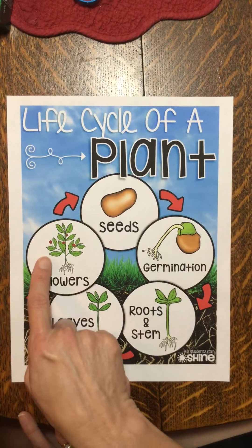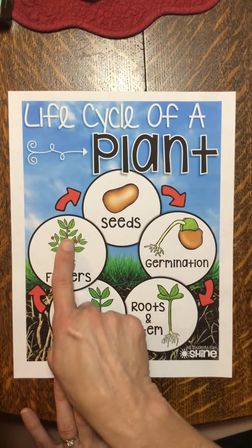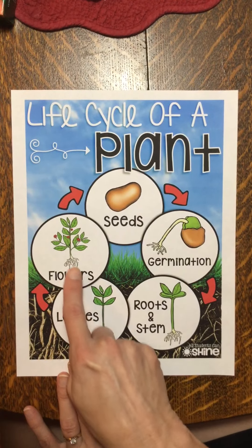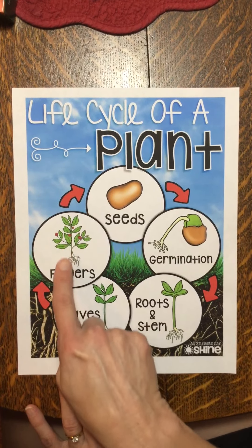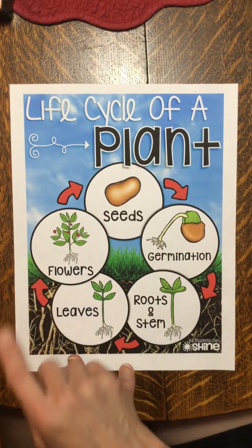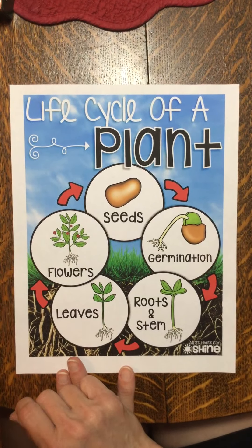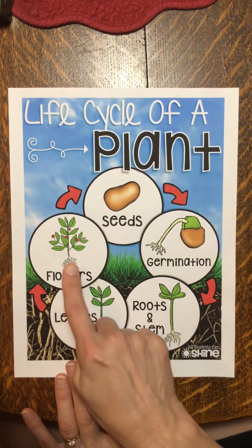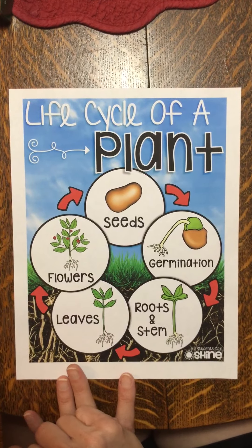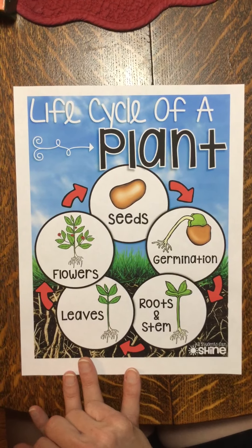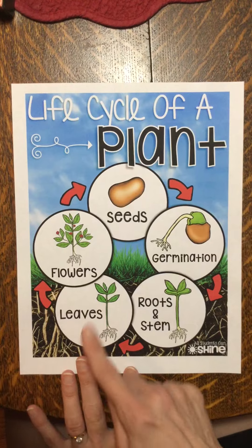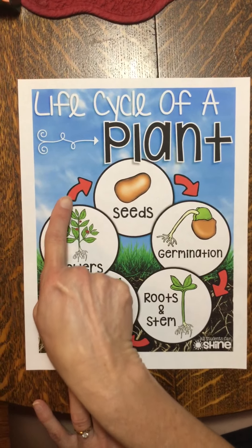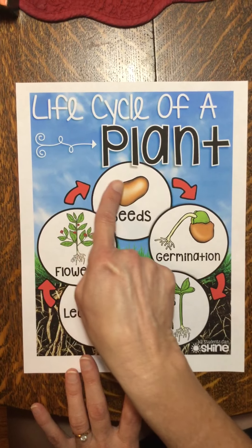Oh my goodness, look at those beautiful flowers! The flowers are growing after the plant gets a little more mature. The job of the flowers is to produce seeds so the plant can grow again, and the next part of our life cycle takes us right back to seeds.